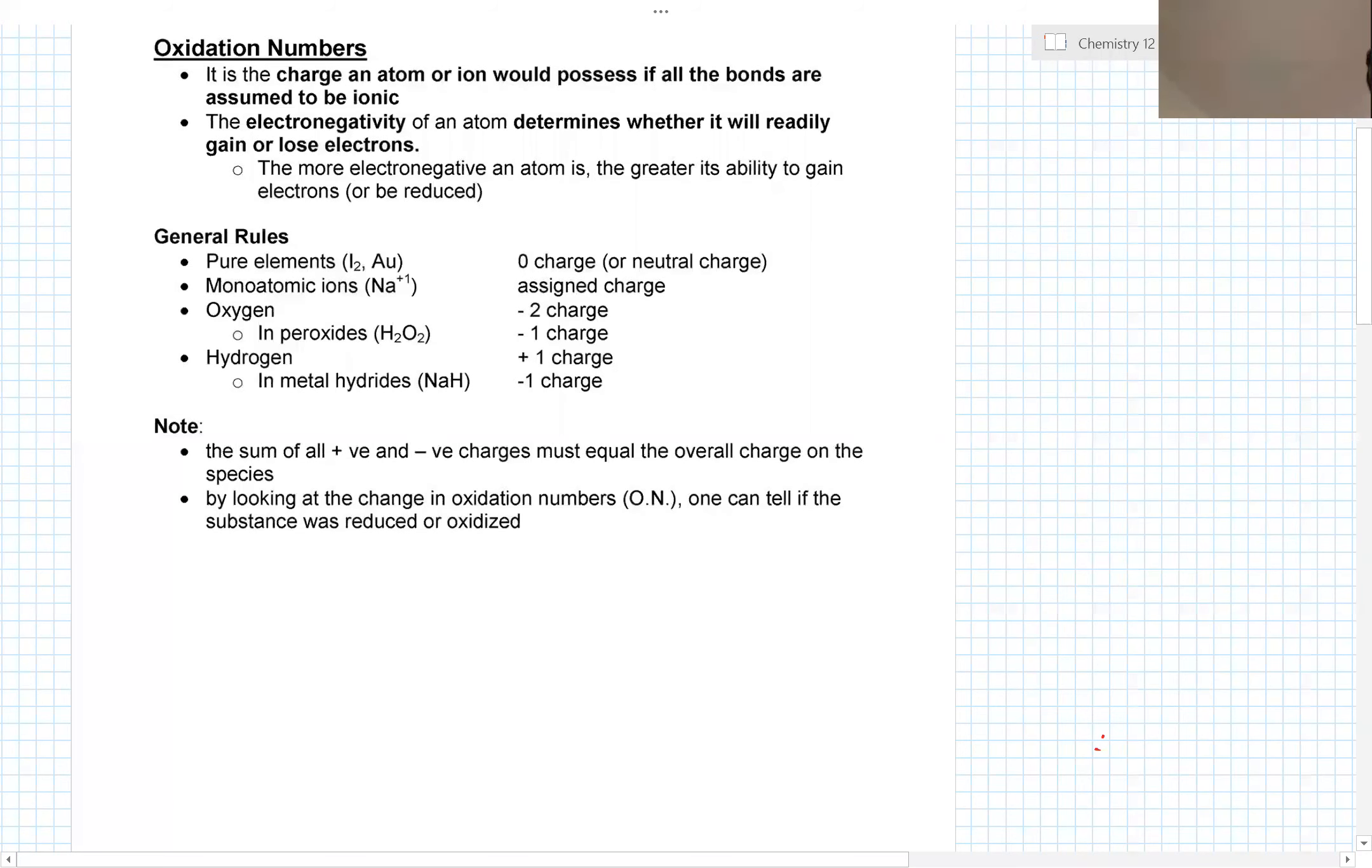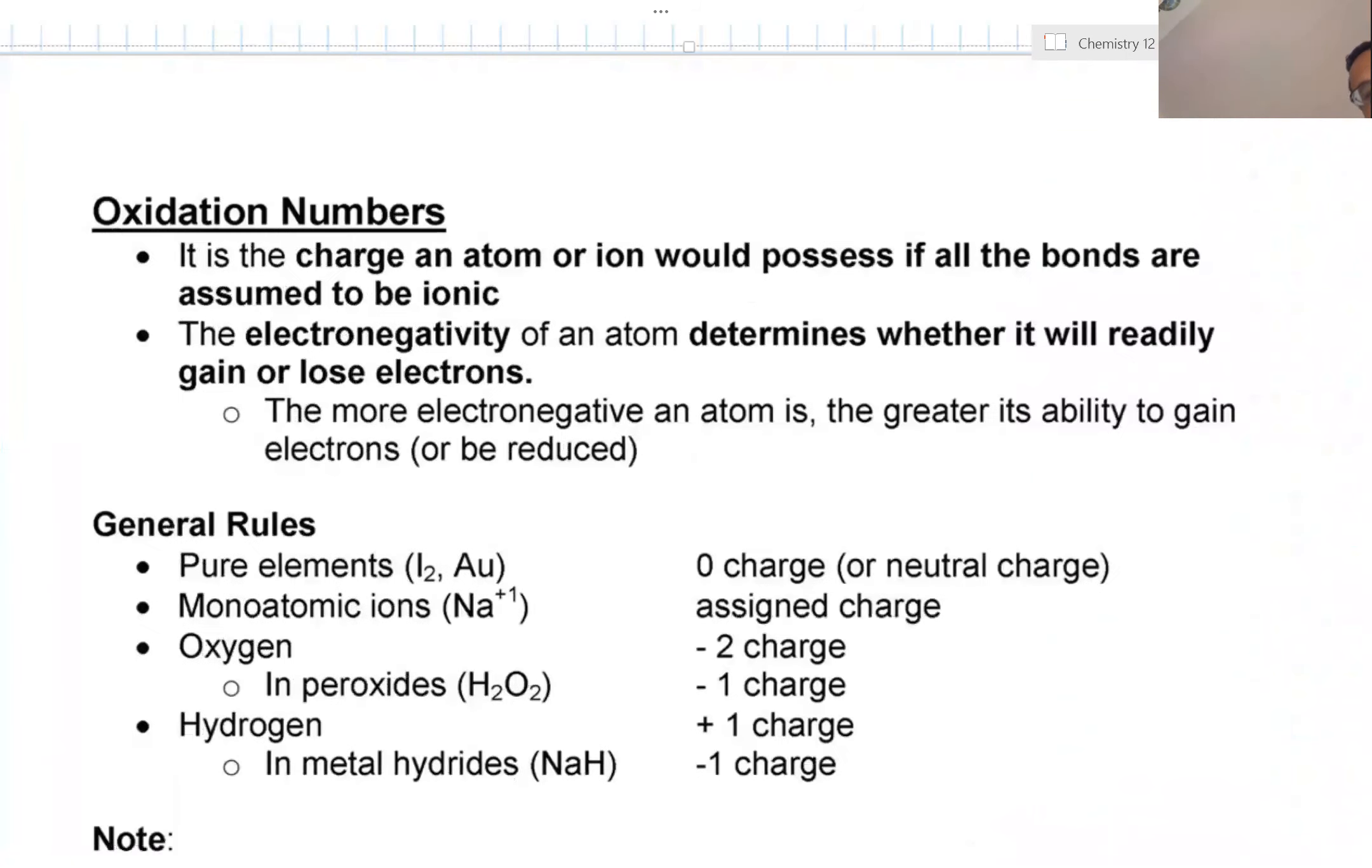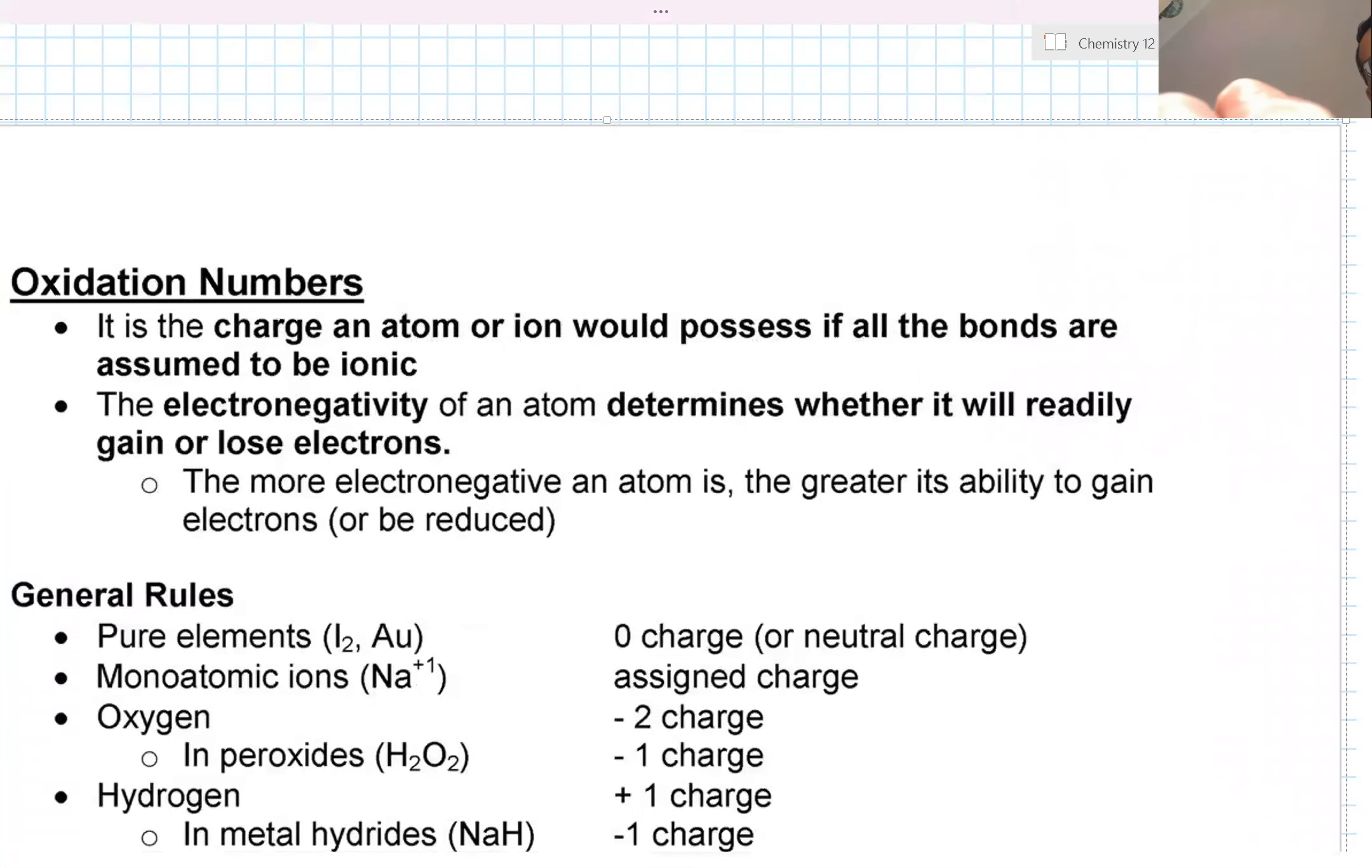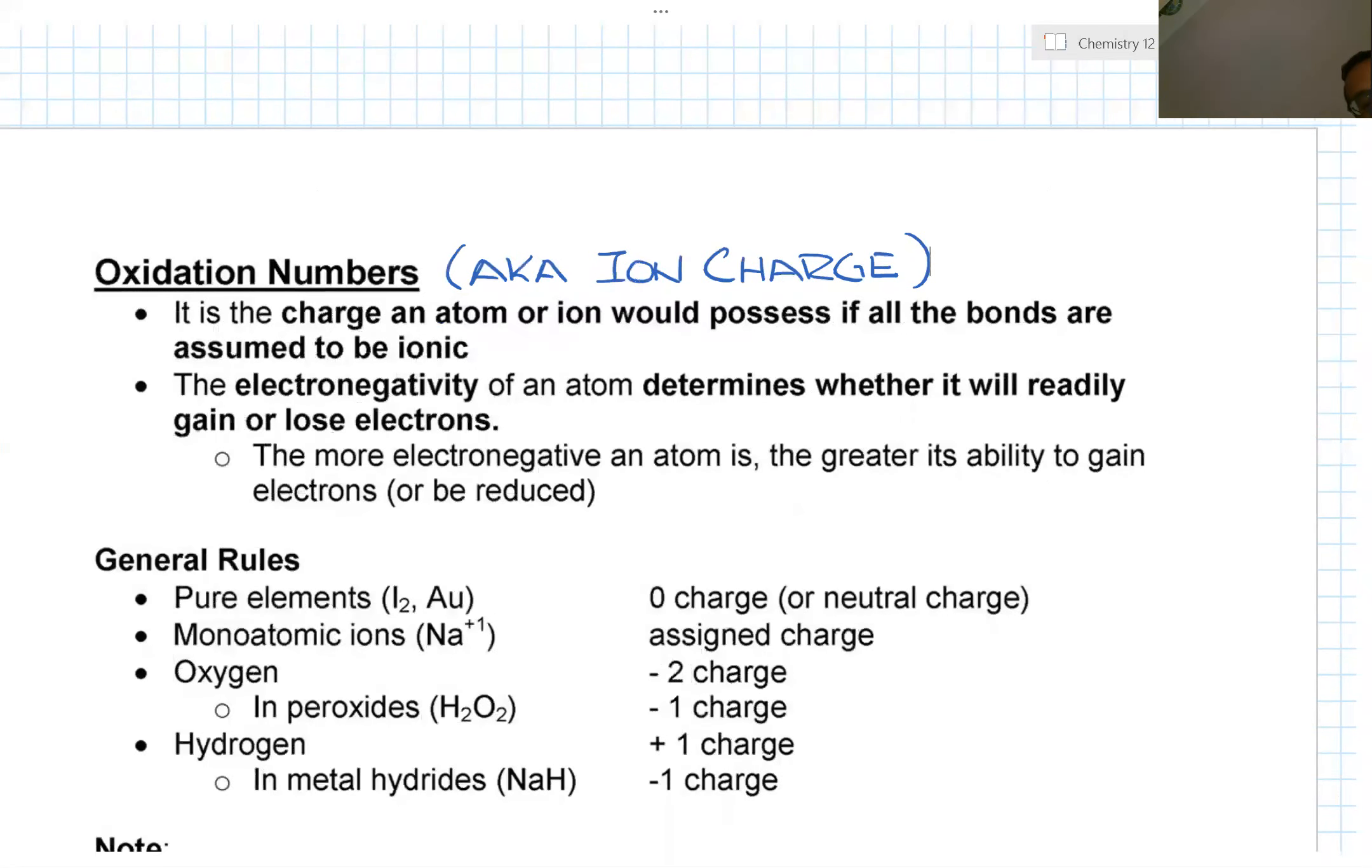Now we use the term oxidation number. Some of you might say well what is oxidation number? What oxidation number is, is another name—aka the ion charge. You remember the term combining capacity or ion charge when we're talking about chemical naming. Officially they are called oxidation numbers.